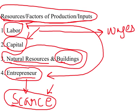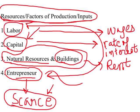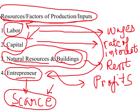The price associated with capital or machines is called the rate of interest. We use rate of interest as the price of capital because most machines are bought with borrowed funds or through loans, and the price of borrowing money is the rate of interest — so indirectly, rate of interest becomes the price of capital. The price of natural resources and buildings we call rent, and entrepreneurs earn profits. This is a systematic classification of resources that we will use throughout. Economics, once again, is how we use these scarce resources to satisfy unlimited human wants.